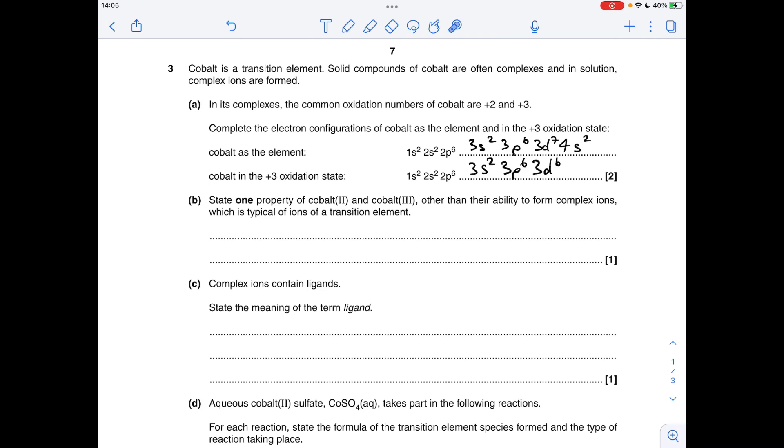Part B, one property of cobalt 2 and cobalt 3 other than their ability to form complex ions which is typical of ions of a transition element. We can't use variable oxidation states, obviously that's referenced in the question, so you can either go for they form coloured compounds or coloured ions, and you could have said they can act as catalysts.